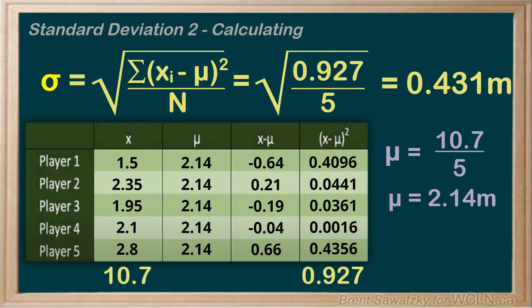It's also worth pointing out that if we were doing the standard deviation for a sample of data — using s and the other formula — you'd do the same table with slightly different symbols but the same structure. When it's time to divide, you'd divide by n minus 1 instead of just n, and then take the square root. Very similar process.